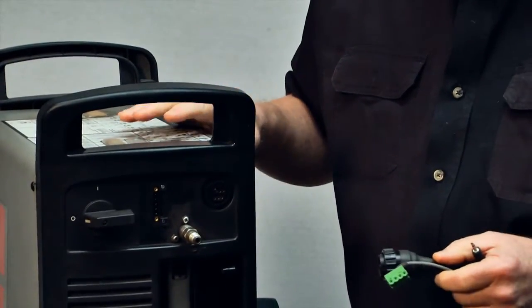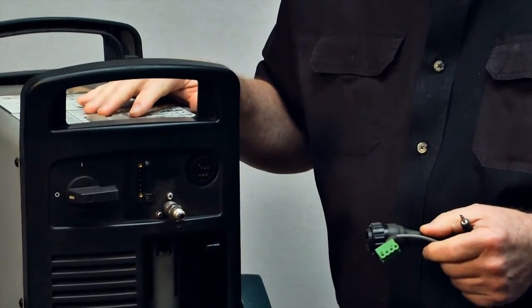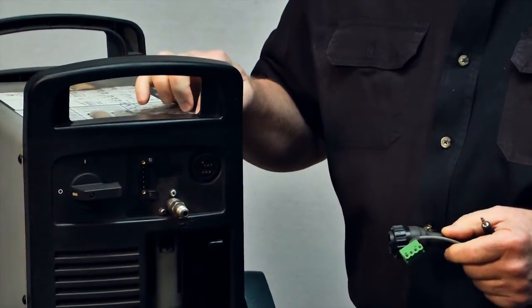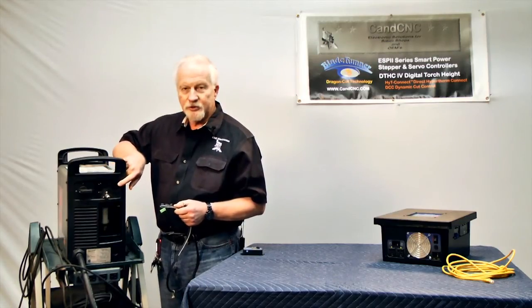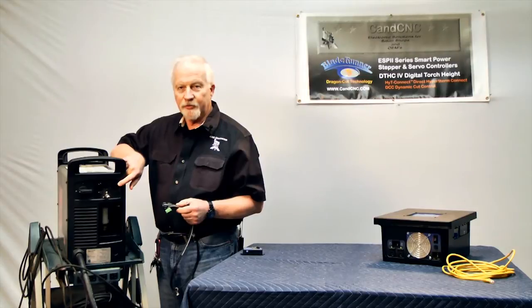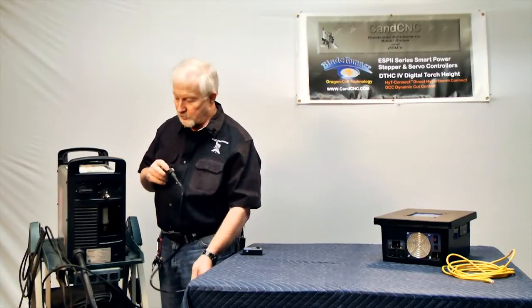This comes on a Hypertherm 45, 65, all the way up to the 125. It's stock on a 45, and it comes with the machine torch on a 65 through 125, or you can buy it as an add-in option with a hand torch.